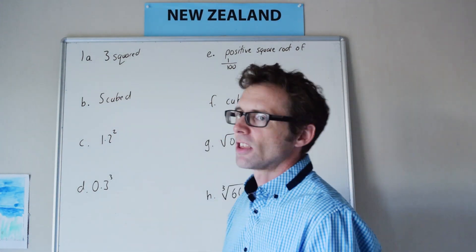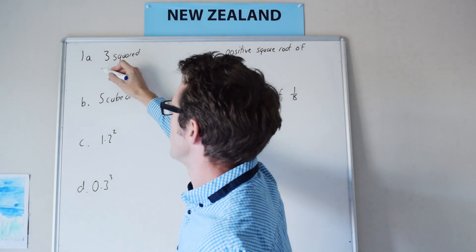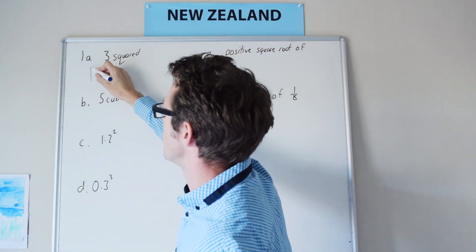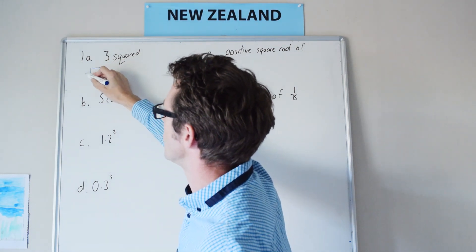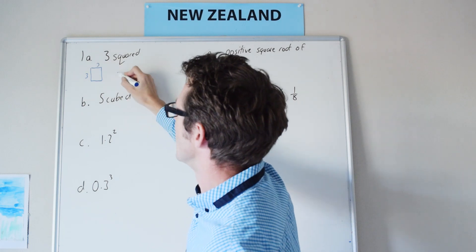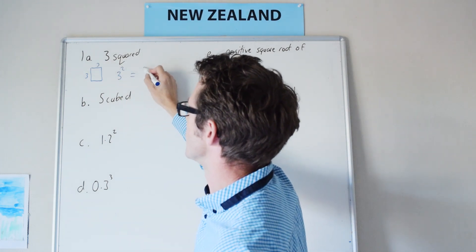1a is 3 squared, what does this mean? Well we're thinking in terms of a square which is made up of equal sides, so 3 by 3, in other words 3 squared which is 9.